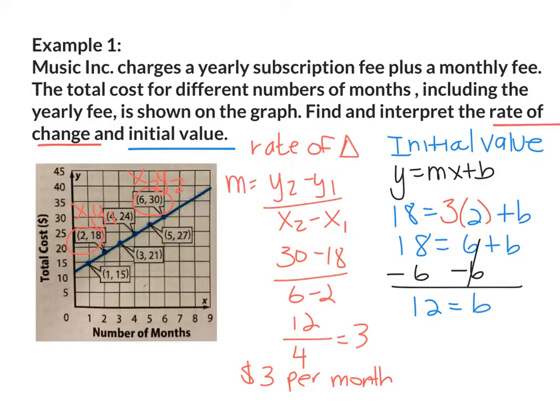So the yearly subscription fee is $12. Since I know that my initial value is 12, I can look at the graph. And if I look on the y-axis, I notice that my line starts a little above 10, which is my y-intercept, which is 12.